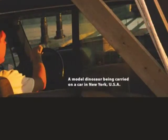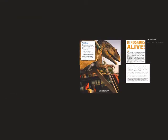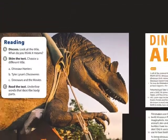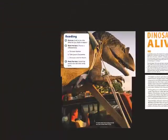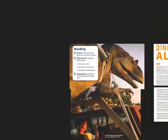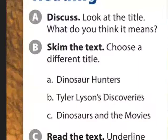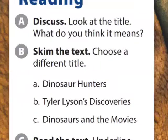Now let's look at the picture. Is that a real dinosaur? Of course not. It says right here: a model dinosaur is being carried on a car in New York, USA. Why do you think this man is carrying the dinosaur on his car?